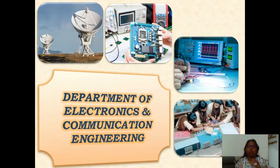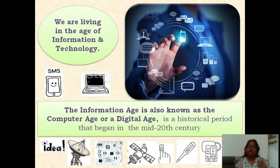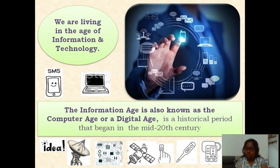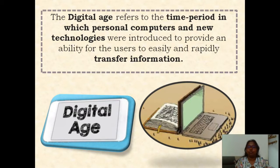Let us see the concept where this branch has come into existence. Today we are living in the age of information and technology. This information age is also known as the computer age or digital age. It is a historical period that began in the mid 20th century. The digital age refers to the time period in which personal computers and new technologies were introduced.